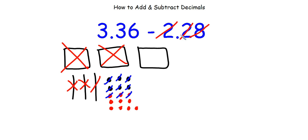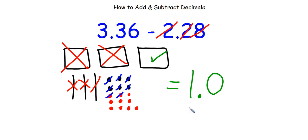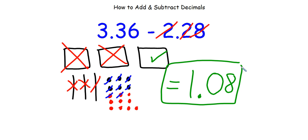Now to get my answer, I count what's left. I have one whole. Do I have any rods left? No — so I put a 0 for no tenths. And counting my hundredths: 1, 2, 3, 4, 5, 6, 7, 8. So that goes in the hundredths place. My answer is 1 and 8 hundredths.